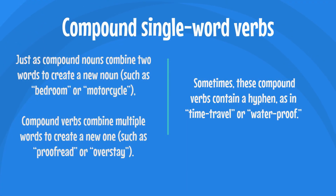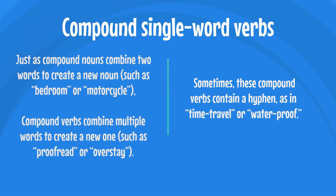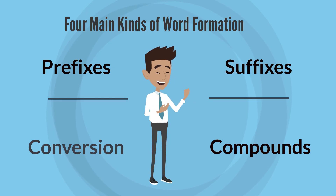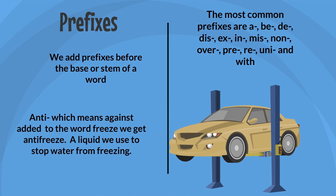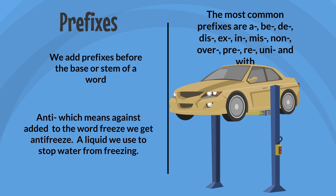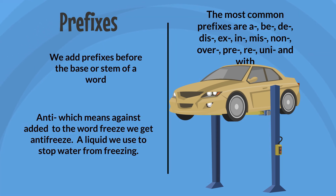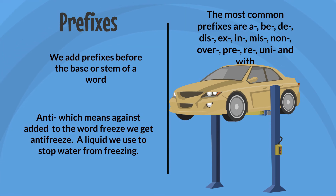Just as compound nouns combine two words to create a new noun — such as 'bedroom' or 'motorcycle' — compound single-word verbs combine multiple words to create a new one, such as 'proofread' or 'overstay.' Sometimes these compound verbs contain a hyphen, as in 'time-travel' or 'waterproof.' Lastly, there are four main kinds of word formation: prefixes, suffixes, conversion, and compounds. We add prefixes before the base or stem of a word. An example: 'anti-' (meaning against) added to 'freeze' gives us 'antifreeze,' a liquid used to stop water from freezing.